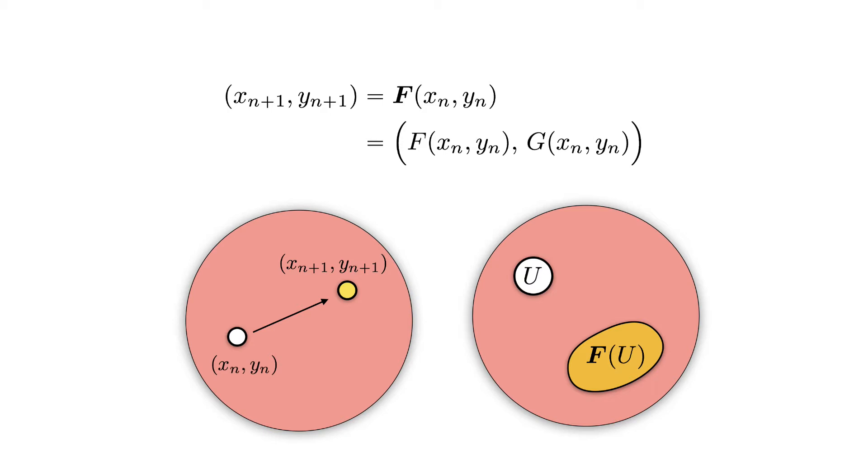Visually, imagine this as a mapping that sends points in the plane to another point, so here the white point to the yellow point. You can also visualize the effect of mappings on sets. For example, here f stretches the initial circle U to an ellipse F(U).